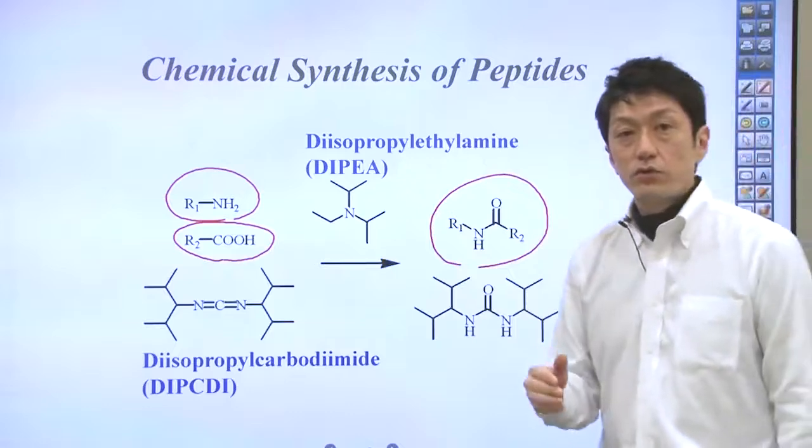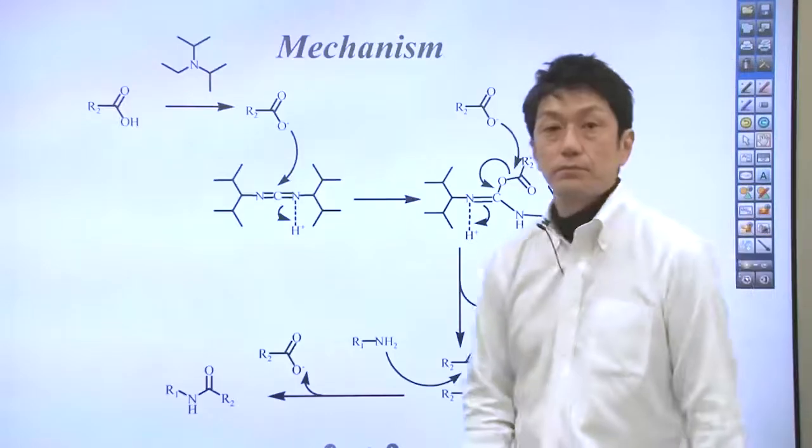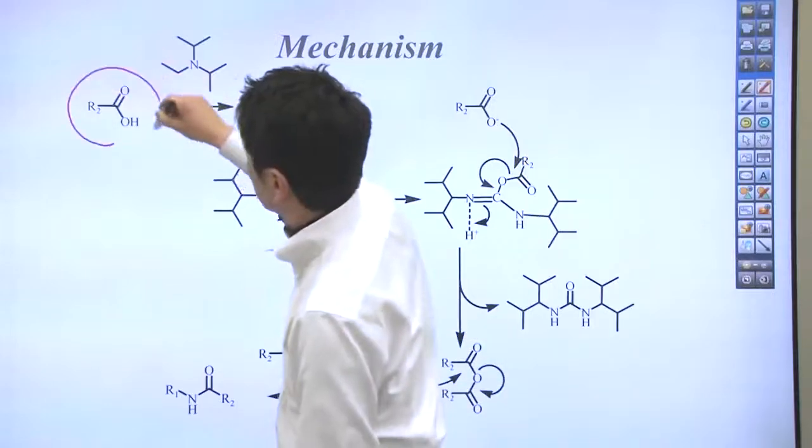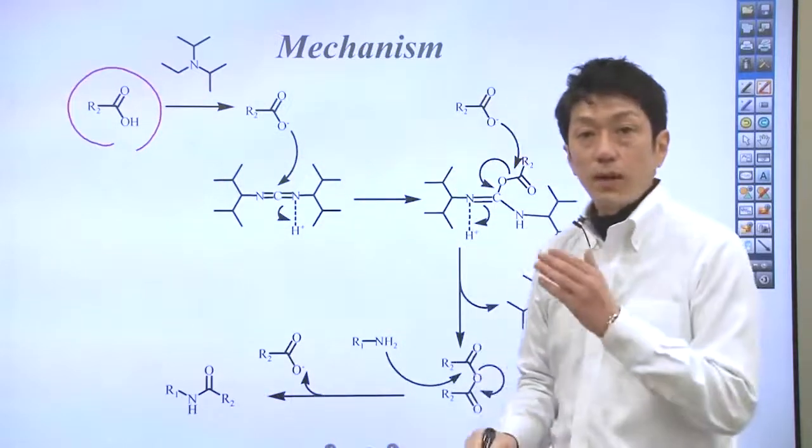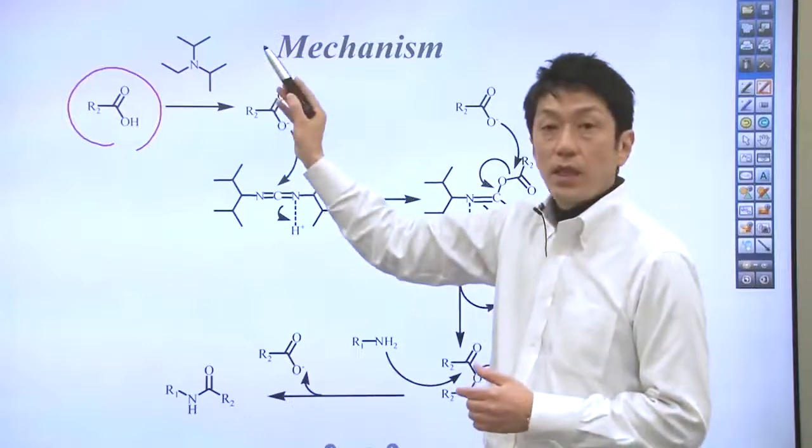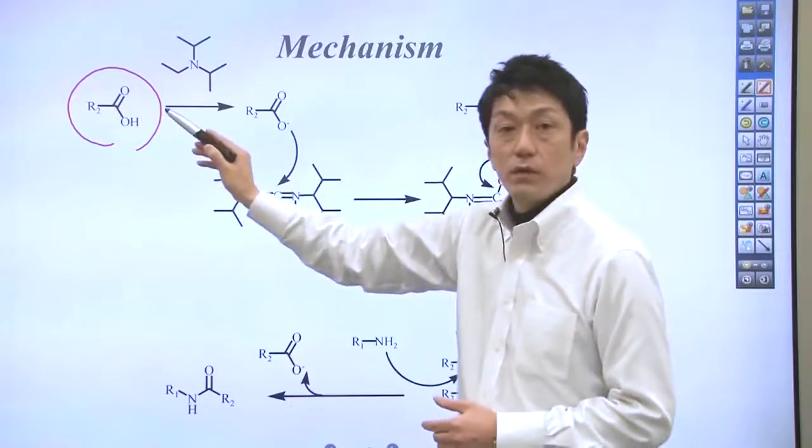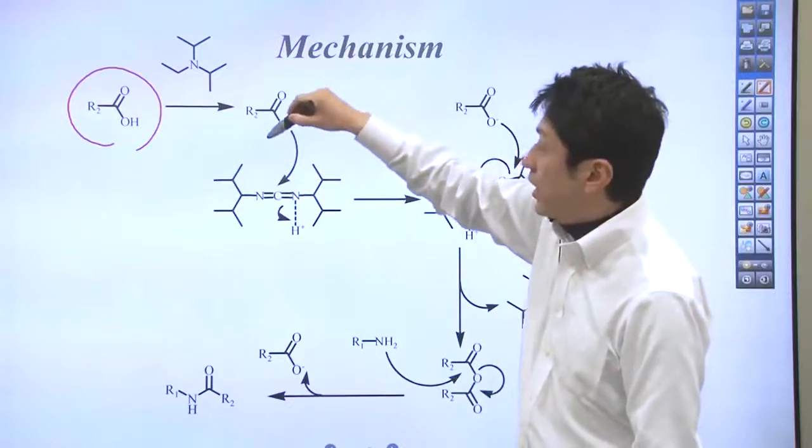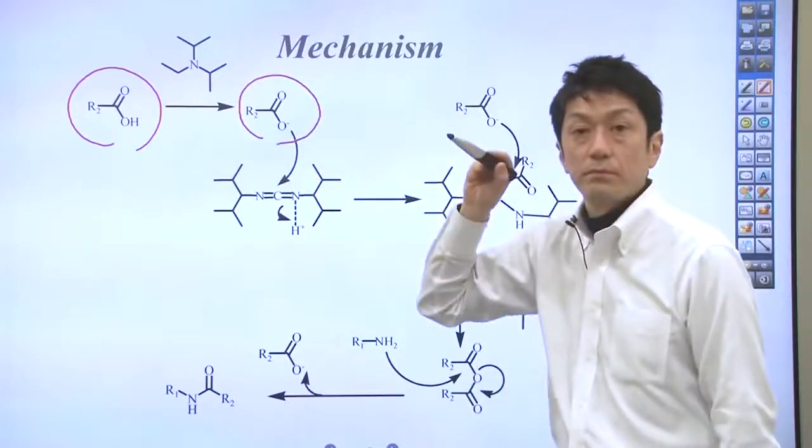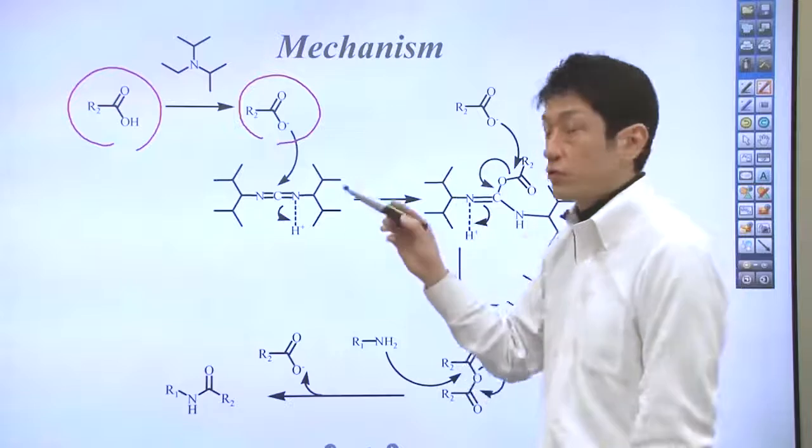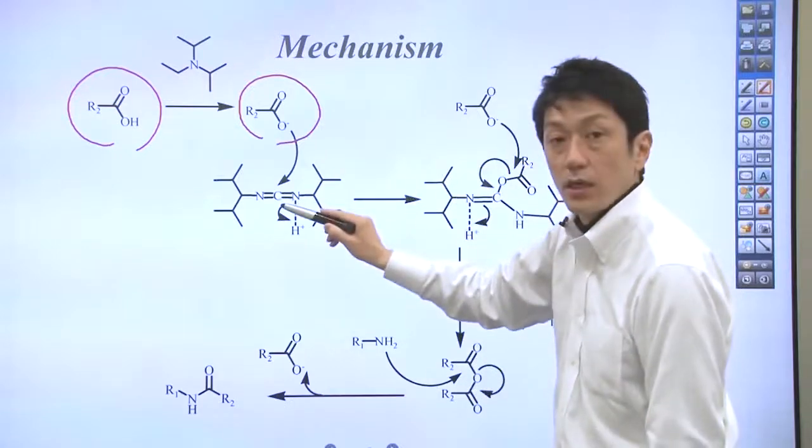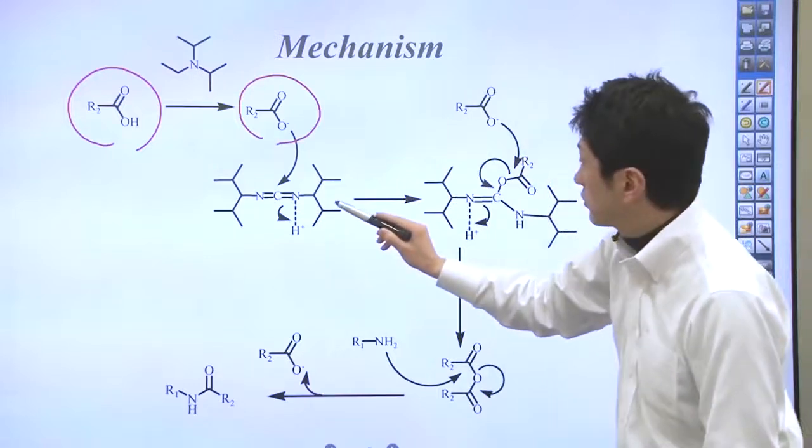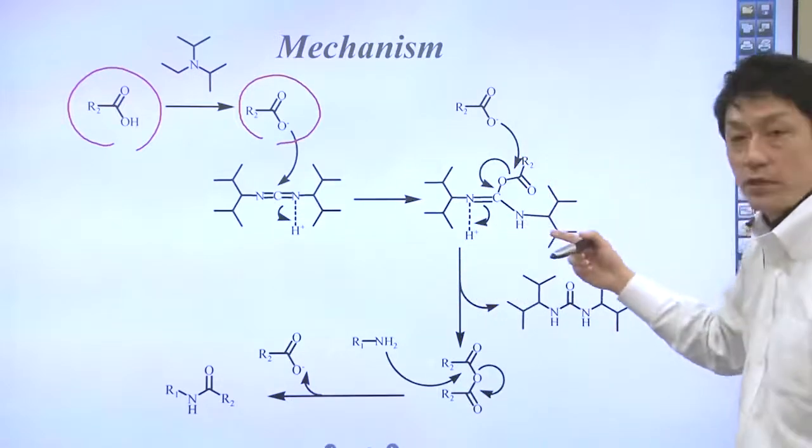So let's go through the detailed mechanism. Here is the carboxylic acid. Then the bulky base takes a proton from the carboxylic acid. Now the acid is activated for the nucleophilic attack to this electron-deficient carbon of carbodiimide. The product is shown right here.